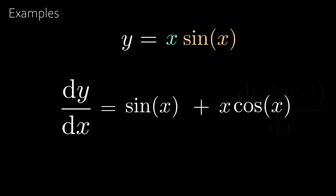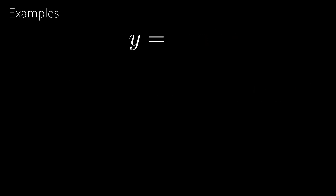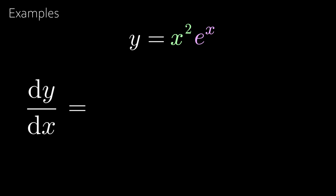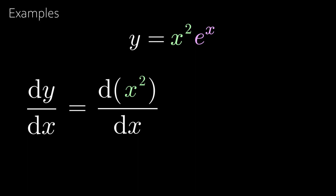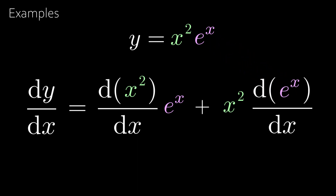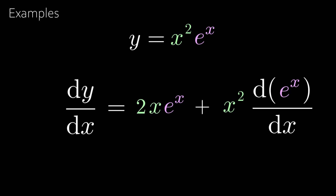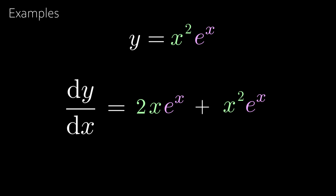Take another example: y = x²·eˣ. Then dy/dx is equal to the derivative of the first function multiplied by the second, plus the first function multiplied by the derivative of the second function. The derivative of x² is 2x and the derivative of eˣ is just eˣ, giving dy/dx = 2x·eˣ + x²·eˣ.